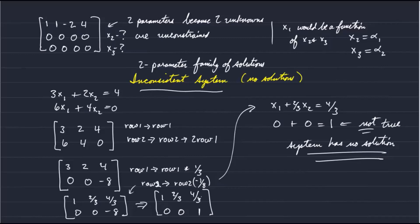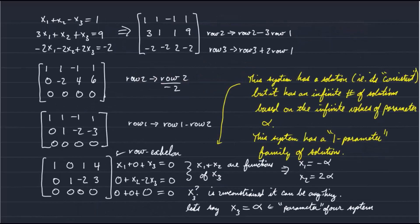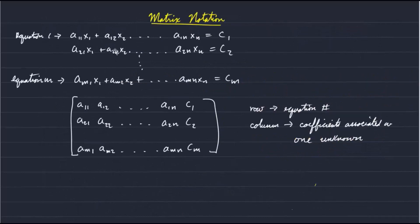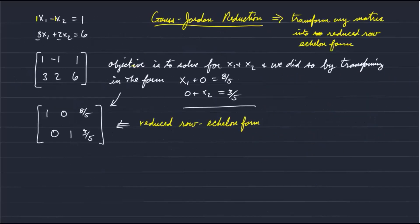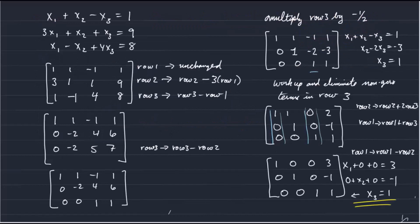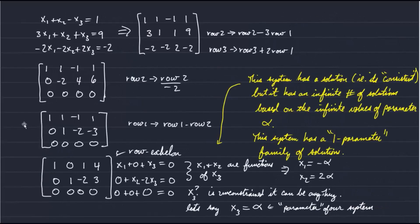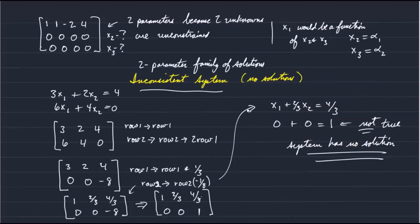In this video we looked at converting a system of equations to matrices and introduced the concept of reducing a matrix to reduced row echelon form. We examined three examples: one with a unique solution, one with an infinite number of solutions, and finally an inconsistent system with no solutions. That concludes our discussion of systems of linear algebraic equations.